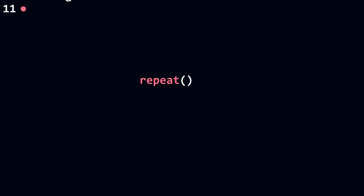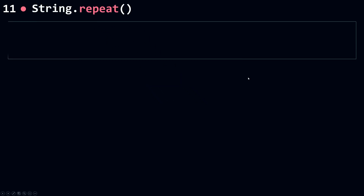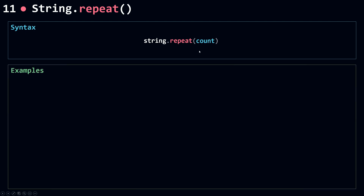Now let's talk about repeat. Repeat is used whenever you want to do more copies of a string. The syntax is simple: you call repeat on the string you want to copy, and then pass in the number of copies you want. This is called count. Now let's see some examples.